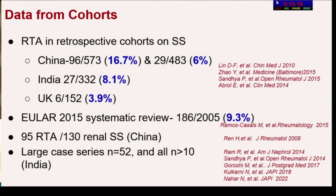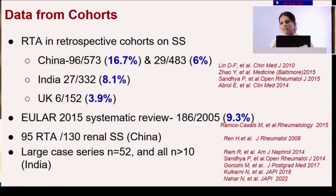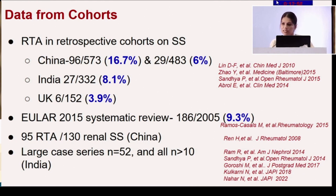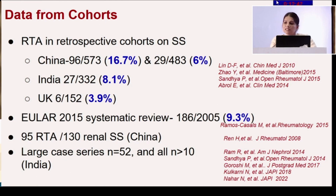Looking at data from retrospective cohorts across the world, in an early Chinese study the frequency of RTA was 16.7%; in a more recent Chinese study, 6%; in an Indian study from CMC Vellore, 8.1%; in the UK, 3.9%. A EULAR 2015 systematic review reported 9.3%. The largest collection of renal tubular acidosis cases is from China — a 2008 Journal of Rheumatology study of 130 renal Sjogren's patients, of which 95 had RTA.